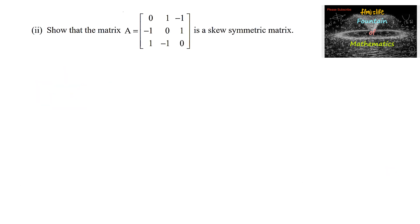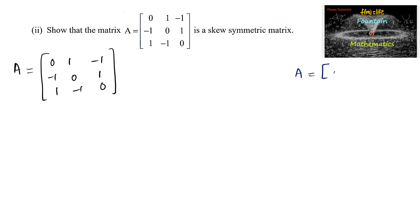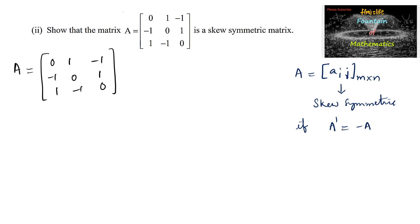Now let us see another problem. Show that the matrix A is equal to 0, 1, minus 1, minus 1, 0, 1, 1, minus 1, 0 is a skew-symmetric matrix. We know that a matrix A equal to Aij with order m by n is said to be skew-symmetric if A transpose is equal to negative A, or equivalently Aij is equal to negative Aji for every i and j.